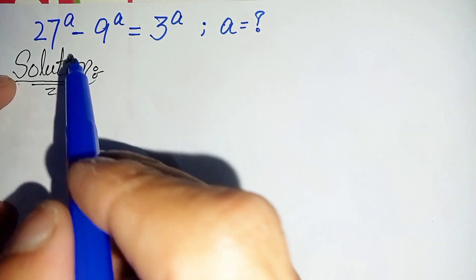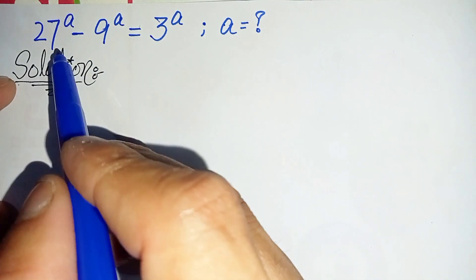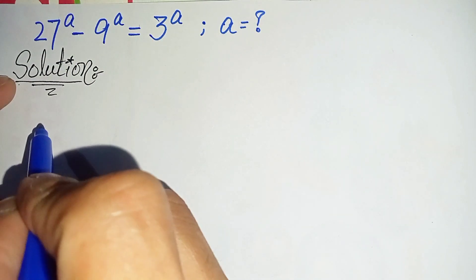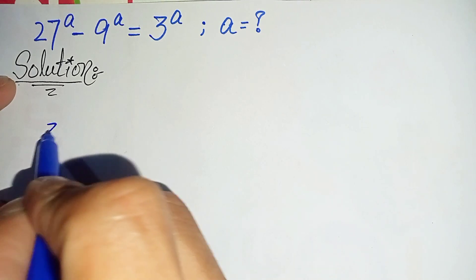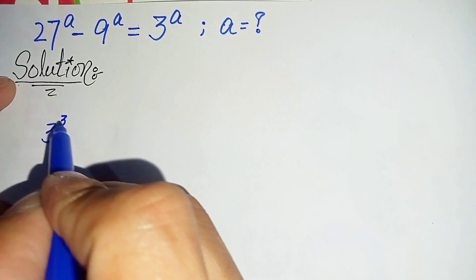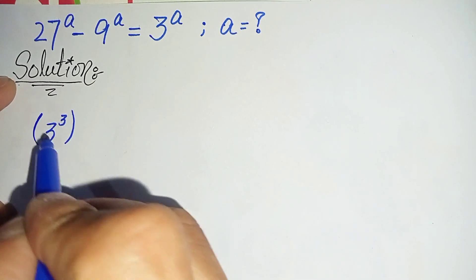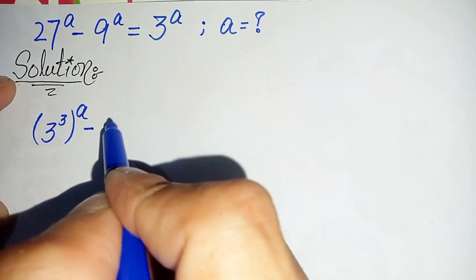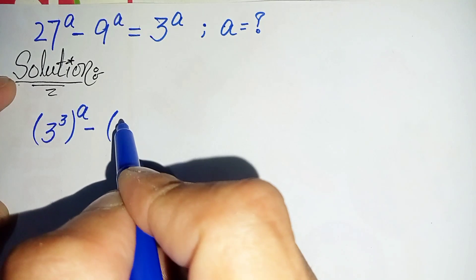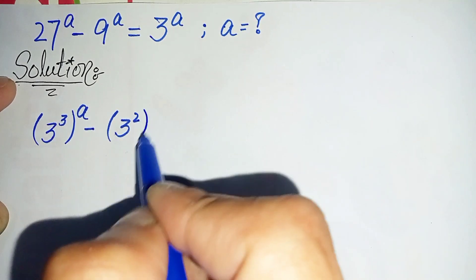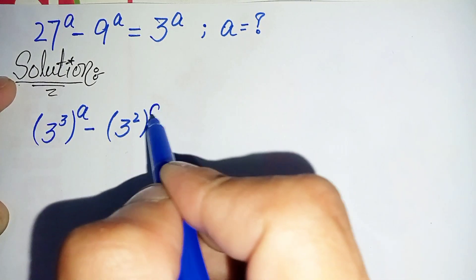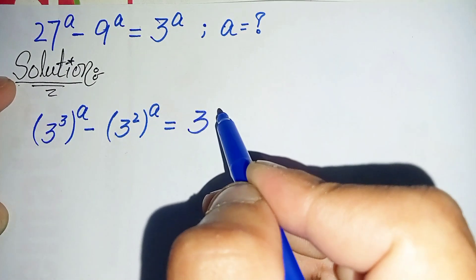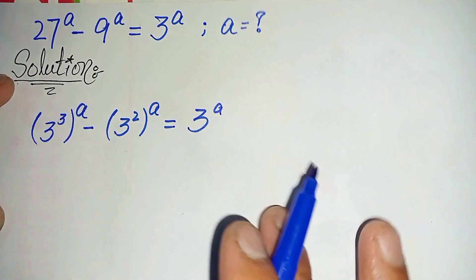Now here in this problem, first of all, we will change the bases on the left hand side to exponential form. So here in the left hand side, we can write 27 as 3 raised to power 3, raised to power a, minus we can write 9 as 3 raised to power 2, raised to power a, is equal to 3 raised to power a on the right hand side.